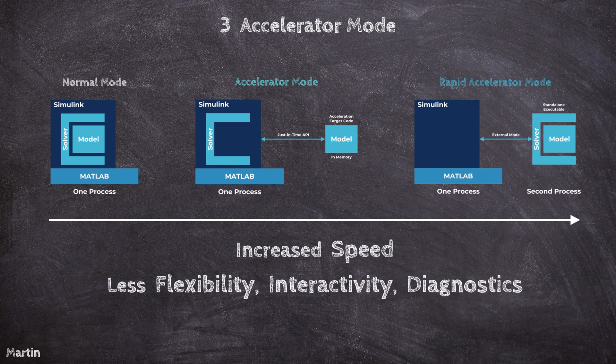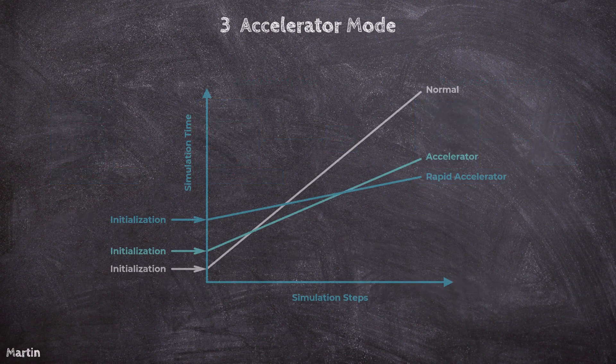When choosing between Normal Mode, Accelerator Mode, or Rapid Accelerator Mode, it is important to balance simulation speed with the level of flexibility and interactivity required for your specific task. When simulation execution time exceeds the time required for code generation, Accelerator Mode and Rapid Accelerator Mode offer significant speed improvements over Normal Mode. However, their performance advantage depends on the model's complexity, content, and simulation stop time.